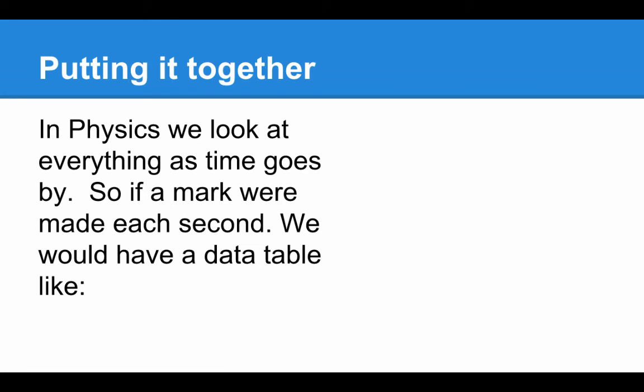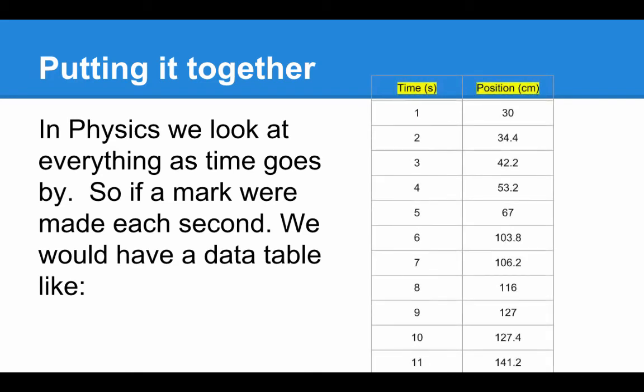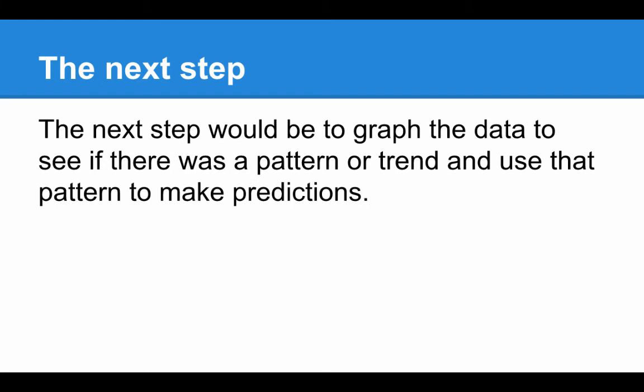So now we put it all together. In physics, we look at everything as time goes by. So if every mark were made each second, we would have data that looked like this. Remember that first measurement was 30. And then the second measurement was 34.4. And so on. This would be our data table that we would come up with. And this is what you're going to be doing. The next step would be to graph the data and see if there was a pattern or a trend that we could use to make predictions. So let's do that.